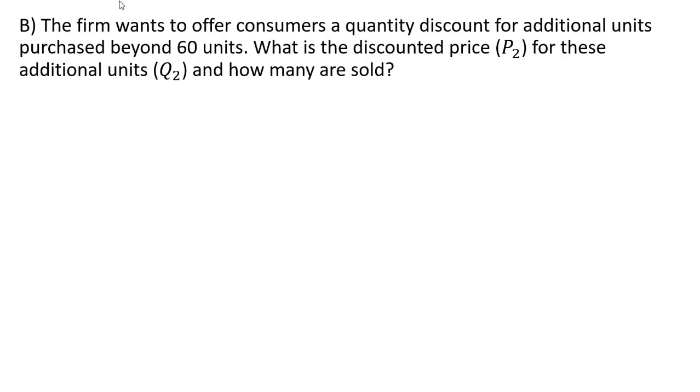Part B: the firm wants to offer consumers a quantity discount for additional units purchased beyond 60 units. What is the discounted price for these additional units and how many are sold? So here we're going to do essentially what is block pricing, allowing consumers to buy additional units at a slightly lower price.